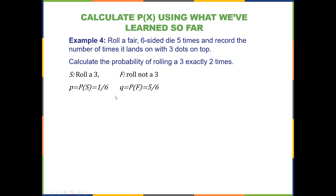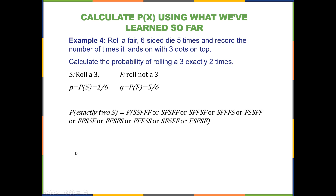The probability of not rolling a three is the probability of failure, denoted q, which equals 5/6. Notice that p and q add up to one — they must, since they are complementary. There are many ways to get exactly two successes when rolling a die five times. For example, two successes then three failures, or success, fail, success, fail, fail, and so on. I've listed all of those ways out and found ten different ways of getting exactly two successes.